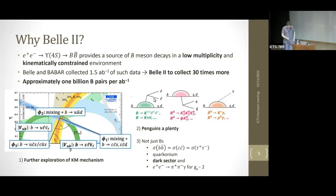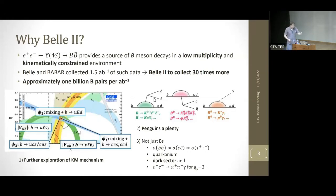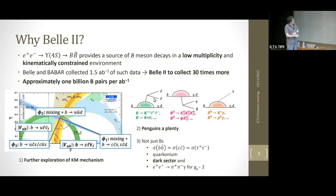There are three main goals in the Belle II program. The one we're famous for is CKM metrology — measuring both the angles and sides of the unitarity triangle through semileptonic decays, mixing, and CP violation. The goal is to make many measurements and find disagreements, since new physics can enter via flavor-changing neutral current diagrams: electroweak penguins leading to b→sll processes, gluonic penguins giving hadronic final states, and purely radiative penguins.